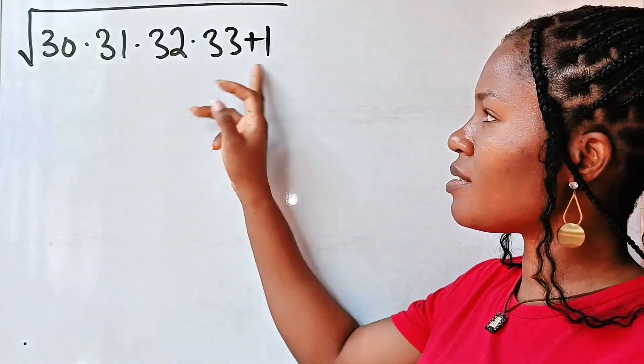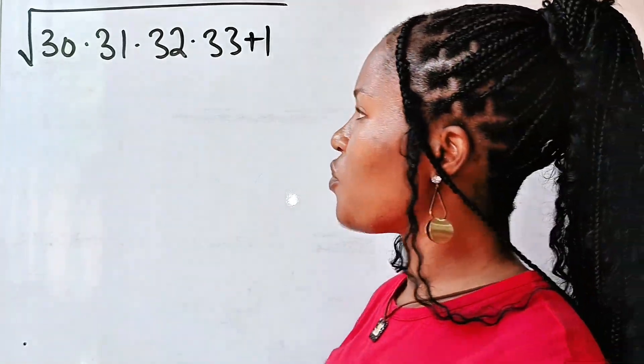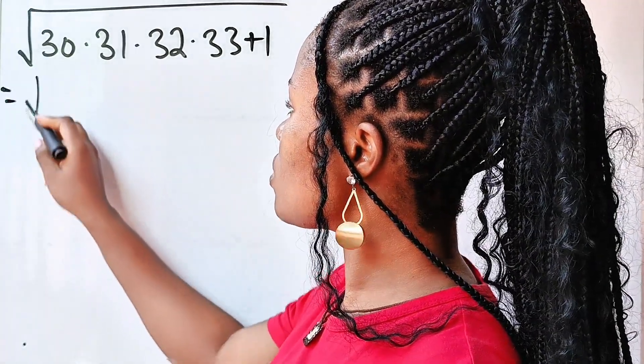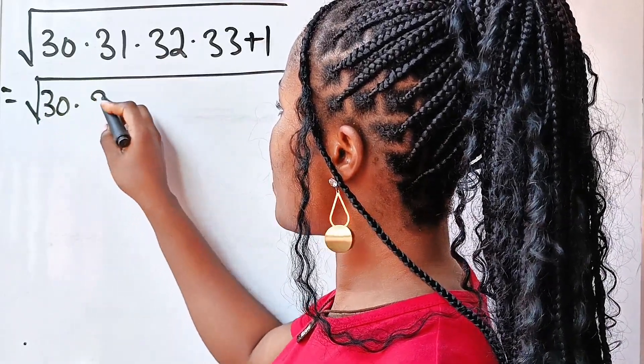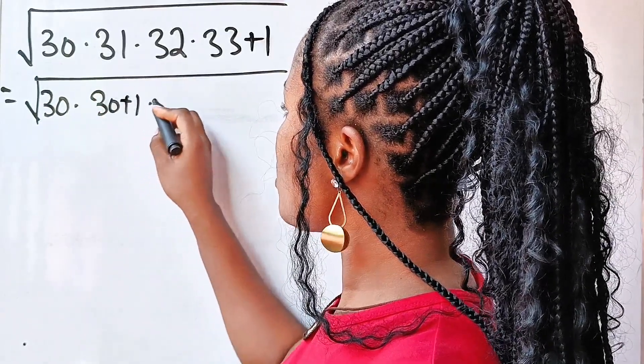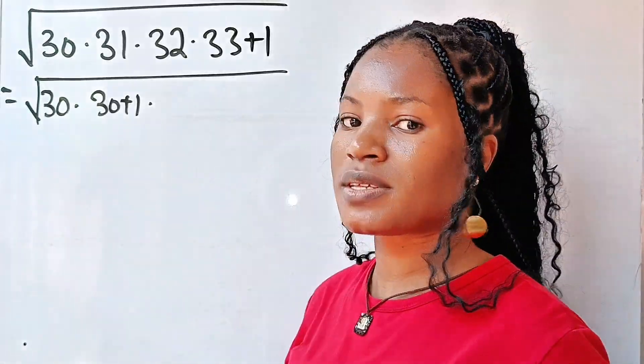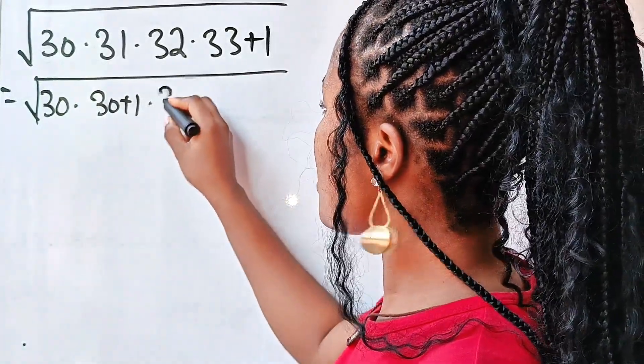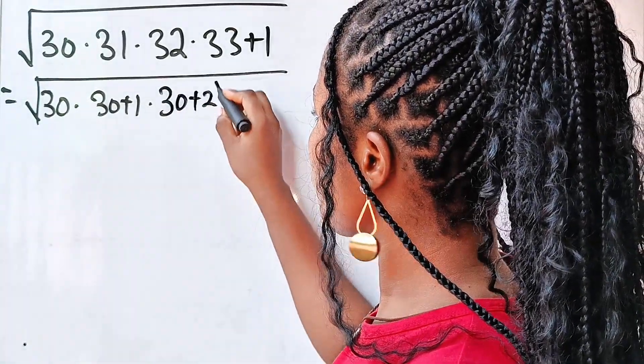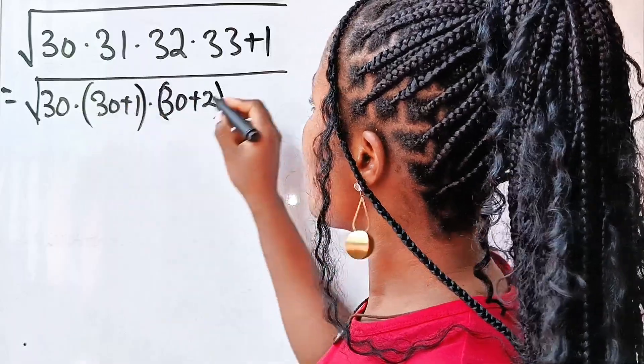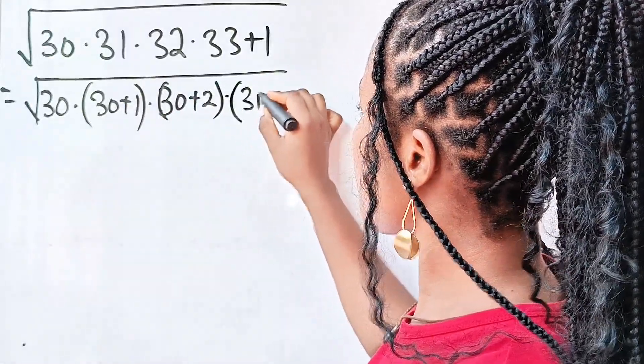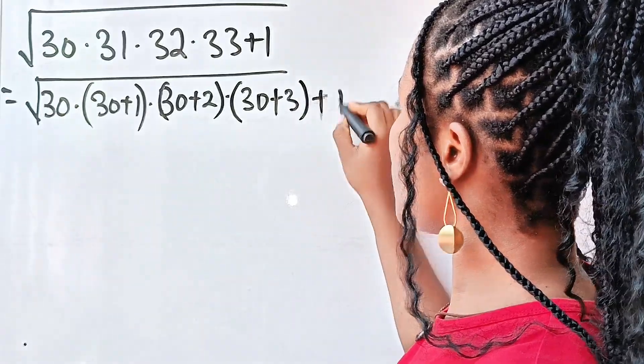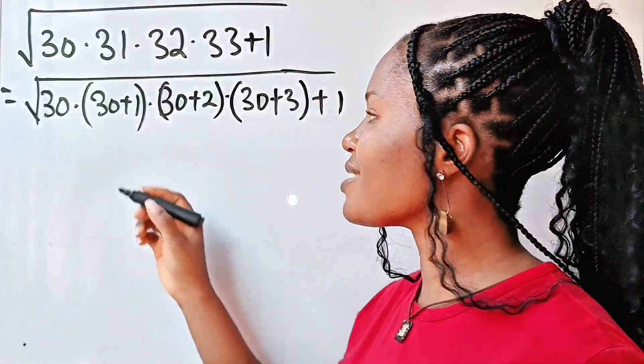First thing we need to do is to simplify this in terms of 30. So if we do that, this is equal to the square root of 30 multiplied by 30 plus 1 multiplied by 30. 2 can be expressed as 30 plus 2, right? 30 plus 2. Multiplied by 30 plus 3 plus 1. As easy as that.